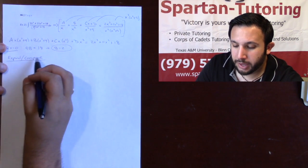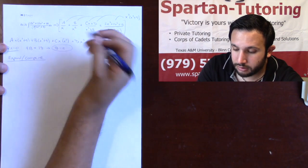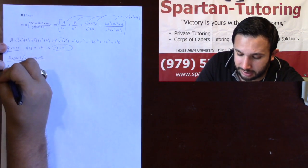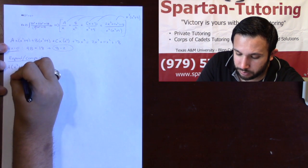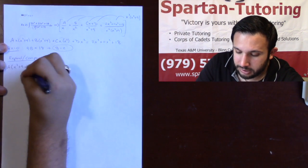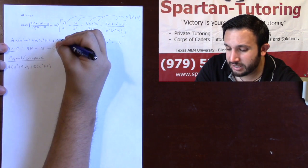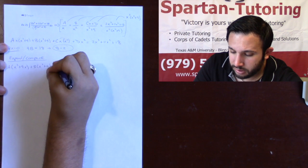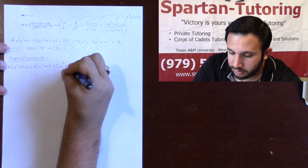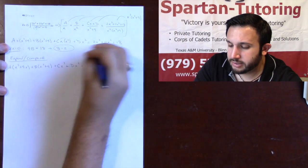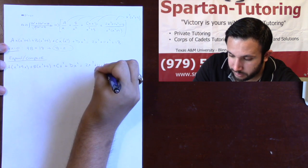Let me explain what I mean by expand. You want to make sure everything is distributed. So A, when I distribute the x into the parentheses, gives Ax cubed plus 9Ax. B stays as Bx squared plus 9B. For C, x times x squared gives Cx cubed. And D gives Dx squared. This equals 2x cubed plus 11x squared plus 18.